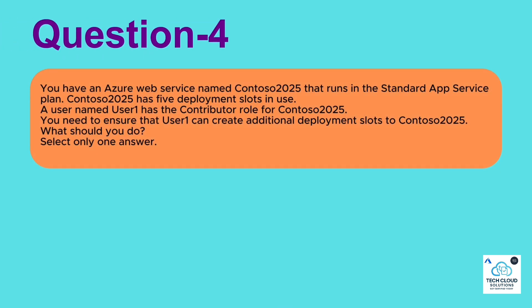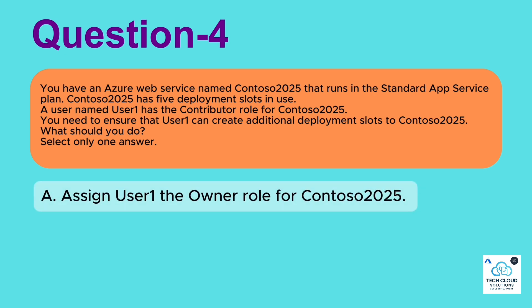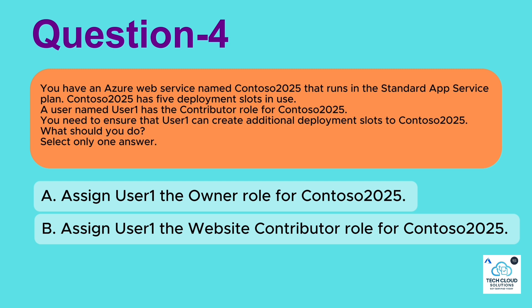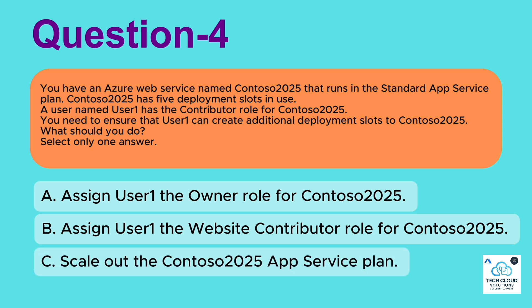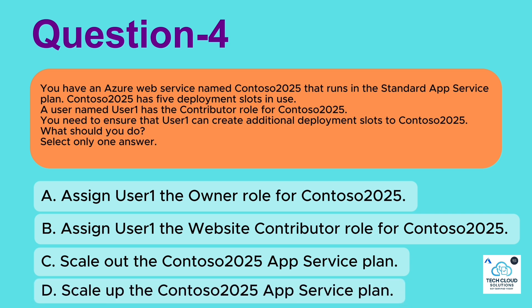Question 4: You have an Azure Web Service named Contoso 2025 that runs in the standard app service plan. Contoso 2025 has five deployment slots in use. A user named User1 has the contributor role for Contoso 2025. You need to ensure that User1 can create additional deployment slots to Contoso 2025. What should you do? Select only one answer. A. Assign User1 the owner role for Contoso 2025. B. Assign User1 the website contributor role for Contoso 2025. C. Scale out the Contoso 2025 app service plan. D. Scale up the Contoso 2025 app service plan.